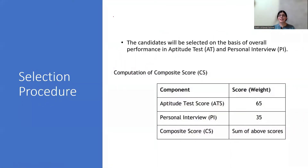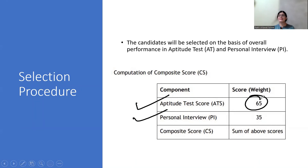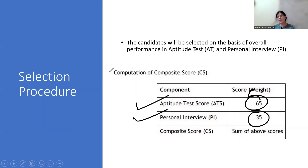The selection process depends on two things: one is the aptitude test score, which carries 65% weightage, and the second is the personal interview, which carries 35%. The total composite score is 100%, and this is how the final selection is made.